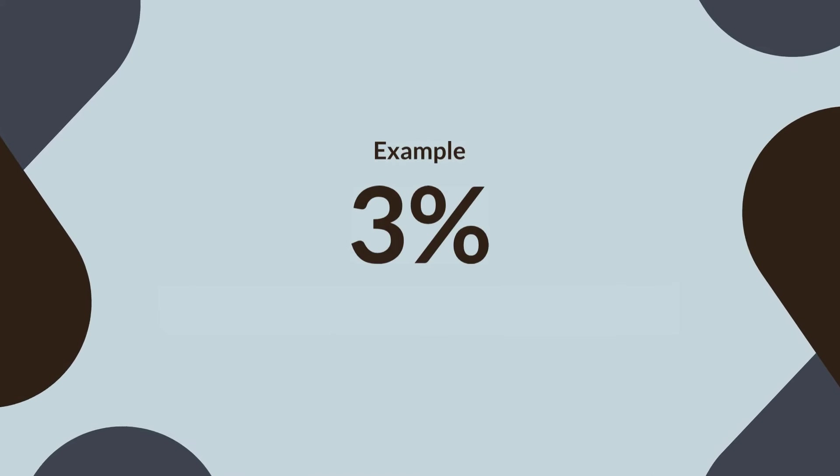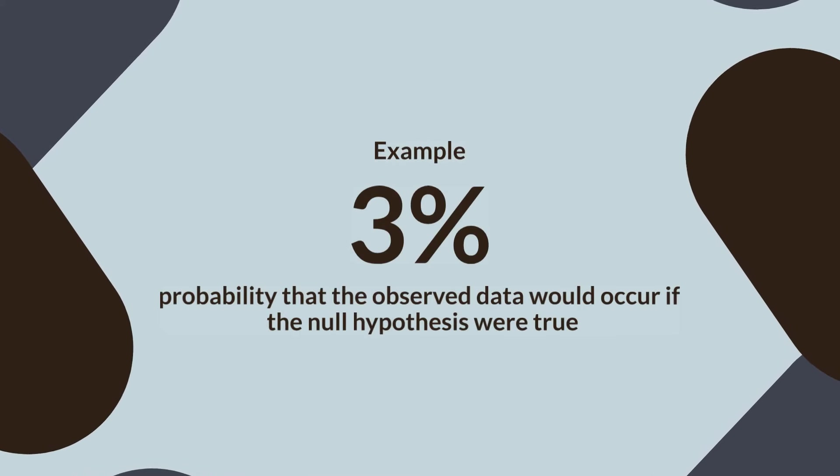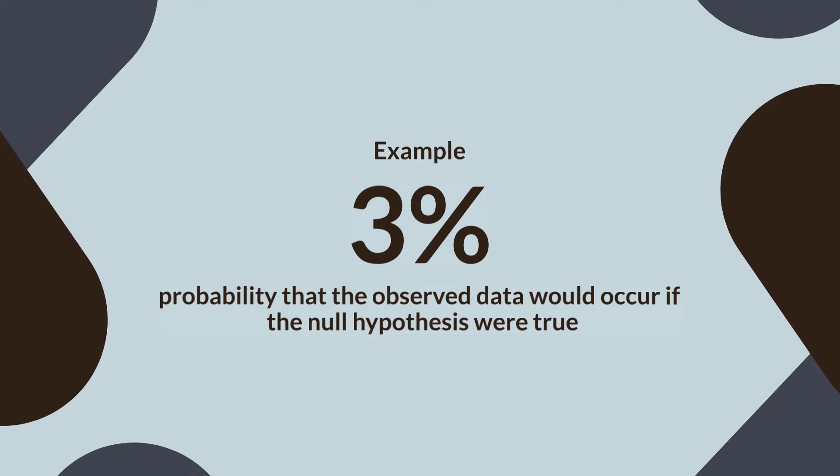For instance, a p-value of 0.03 indicates a 3% probability that the observed data would occur if the null hypothesis were true.